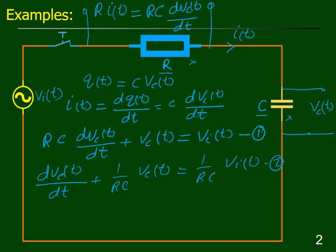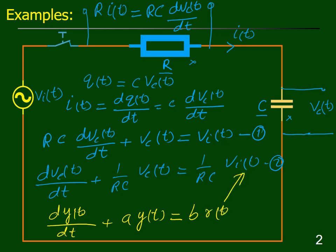Comparing this equation with the standard equation, we find that v_i(t) is the input to the system and v_C(t) is the output. The parameter A equals B equals 1/(RC).